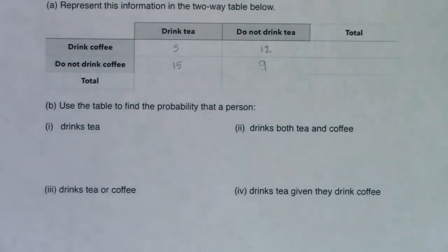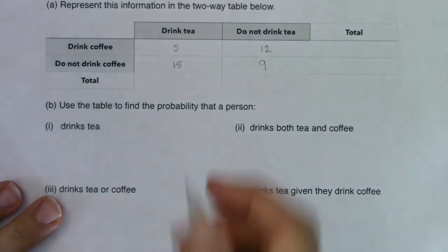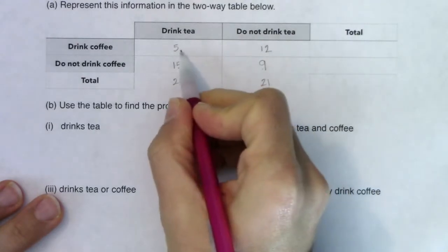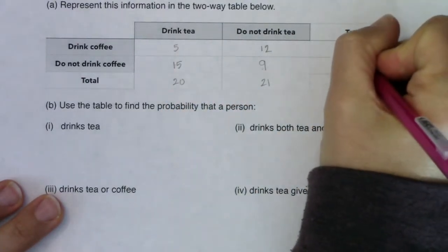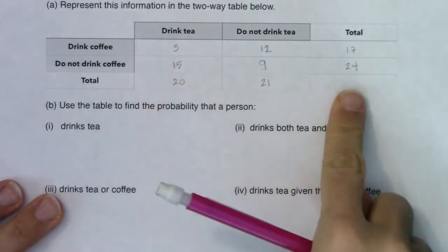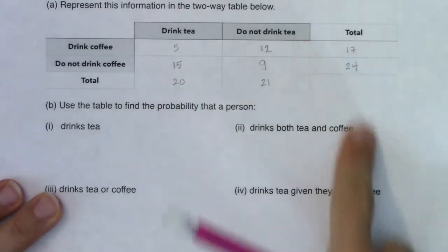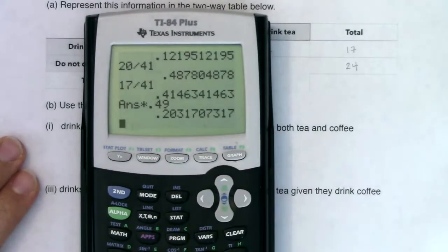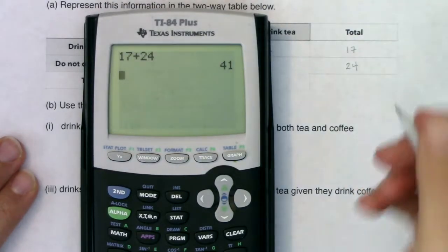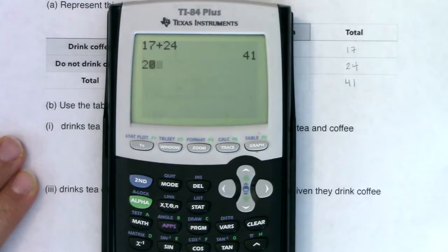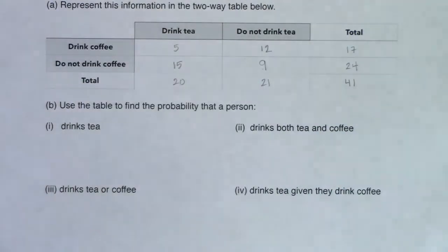I'm going to remove the Venn diagram and fill in the totals — we're going to use the totals for these probability questions. So the column totals are 20 and 21. For the row totals: 5 plus 12 is 17, and 15 plus 9 is 24. I always like to check that my row totals and column totals match: 17 plus 24 is 41, and 20 plus 21 is also 41. So I'm good with the table.